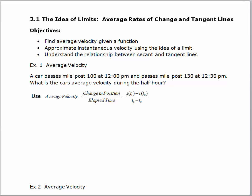When we look at example 1, this is a problem that you should already know how to do. We've got a car passes milepost 100 at 12 p.m. and then passes milepost 130 at 12:30 p.m. What is the car's average velocity during the half hour? Let's find that in miles per hour.